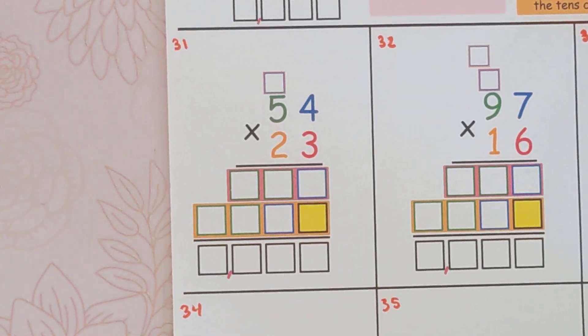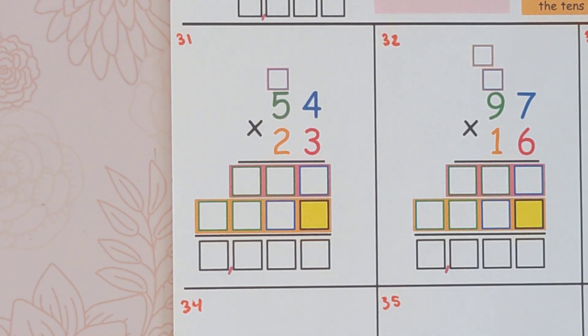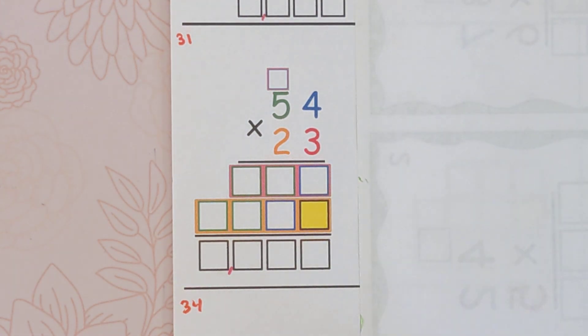Hello! We are doing the standard algorithm of multiplication question 54 times 23. So let's go ahead and get started.